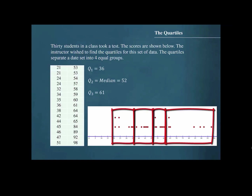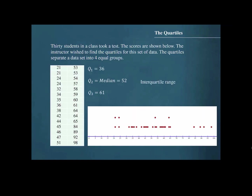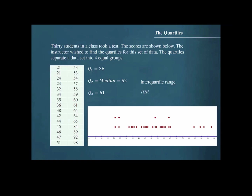These varying widths exhibit the way the data values are distributed between these intervals. In addition to dividing the data set into four equal groups, quartiles can be used as a rough measure of variability. This measure is called the interquartile range — the range of the middle 50% of the data values, abbreviated IQR. The formula is to subtract Q1 from Q3: 61 minus 36 gives an IQR of 25, meaning the middle 50% of the data has a span of 25 units.